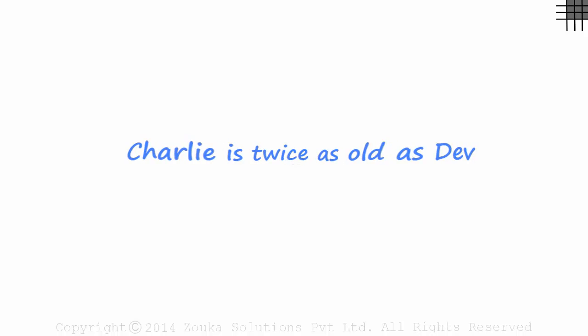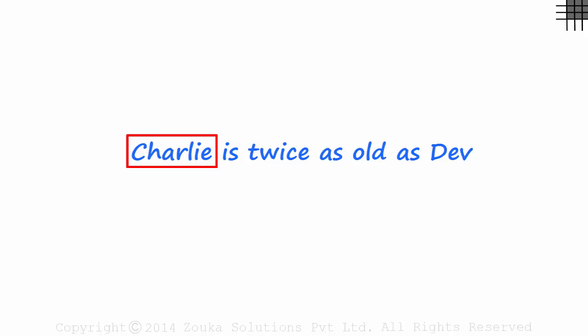Try and interpret this line: Charlie is twice as old as Dave. This means that Charlie's age is twice that of Dave's. Let's try to write this in a shorter way. Assume Charlie's age is C and that of Dave's is D.